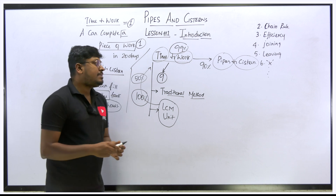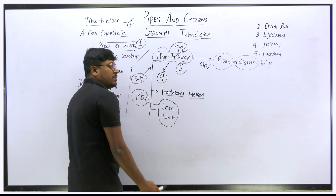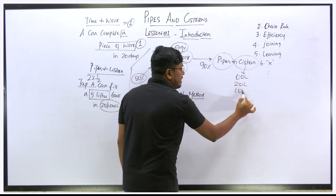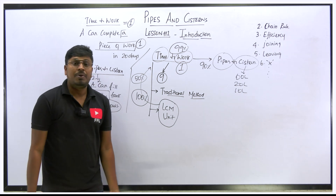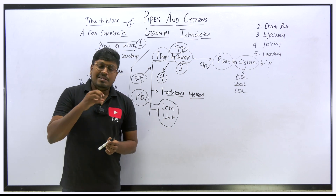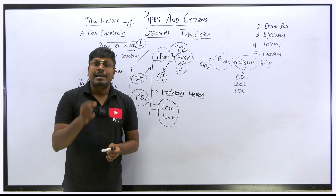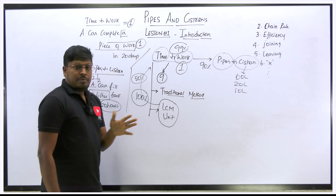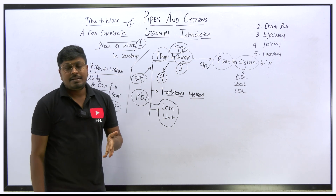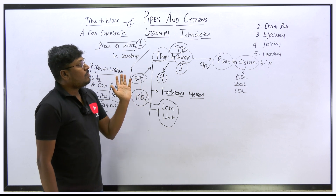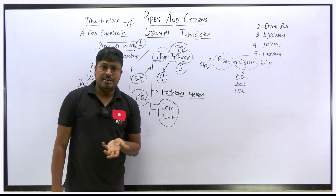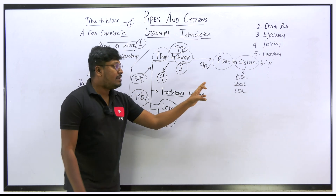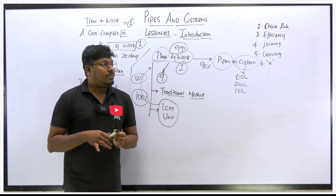That is the key difference between Time and Work and Pipes and Cisterns. In Time and Work, the work is always considered as one (constant) in most questions. But in Pipes and Cisterns, the cistern capacity is given — 60 liters, 20 liters, 10 liters — and you should not equate it to one. Because the tank capacity has been given, in some cases we have to use a different method. That's why I say 90% of the concepts are the same; that remaining 10% is this difference.